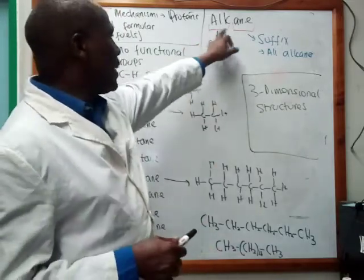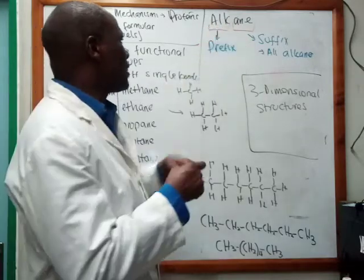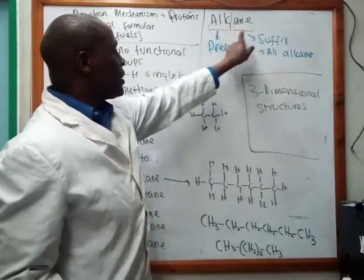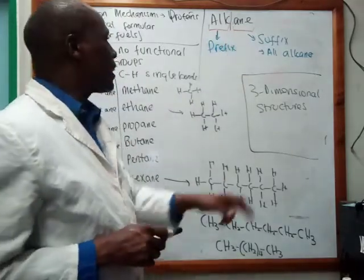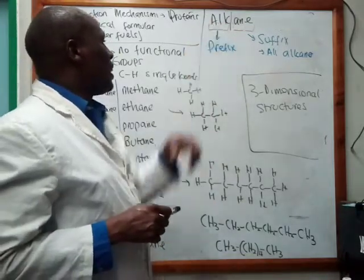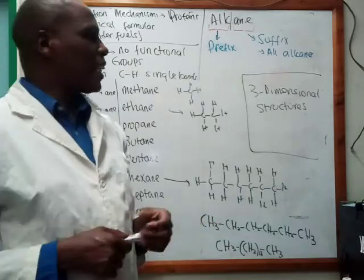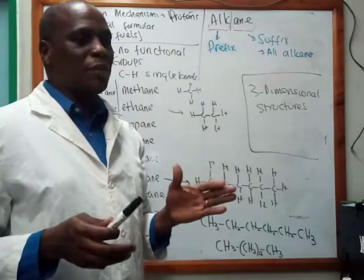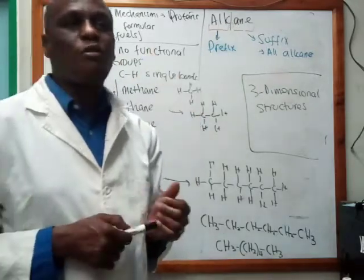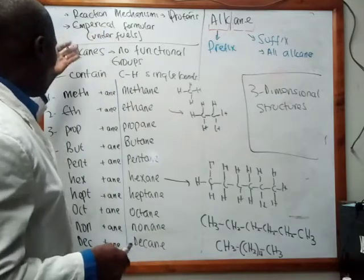The name 'alkanes' can be split into two parts. There is 'alk' as the first part of the name, and then 'ane' as the ending. All alkanes must end with '-ane'. The prefix 'alk' is short for 'alkyl' — it comes from an alkyl substituent — and it tells you the number of carbon atoms the alkane contains. I've provided a table here.